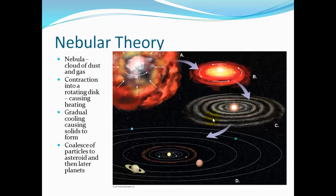One important theory is nebular theory, which discusses how the Earth evolved. It started with a nebula — a cloud of dust and gas — that contracted into a rotating disk, causing heating. Gradual cooling caused solids to form. Denser materials stayed in the center, while lighter materials spread to the outer rings. These particles started to bump into each other, forming asteroids, then planets, and eventually this dust cloud becomes our solar system.